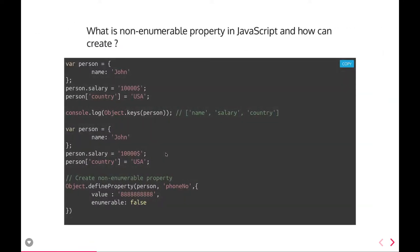The next topic is: what are non-enumerable properties in JavaScript and how can we create them? For this, we should be aware of methods like Object.defineProperty, Object.defineProperties, and Object.hasOwnProperty.